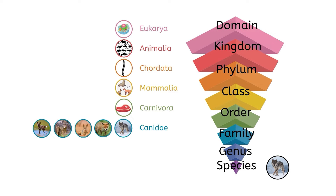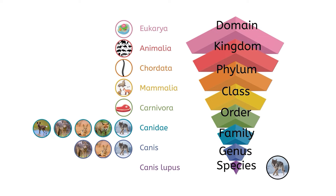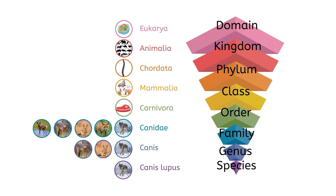Moving down to the next level, wolves belong in the genus Canis, which is even more specific than family, including only six species of wolves, jackals, and coyotes with very specific shared traits. Finally, the species is Canis lupus, of which there is only one member — our friend the gray wolf — who has traits that are entirely unique among the whole animal kingdom. Species get their scientific name by combining the genus and species together, with both in italics and the genus name capitalized.